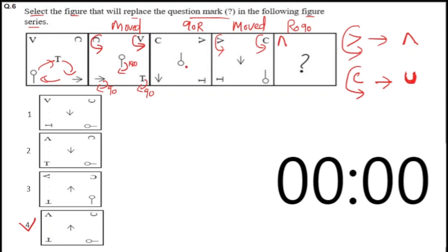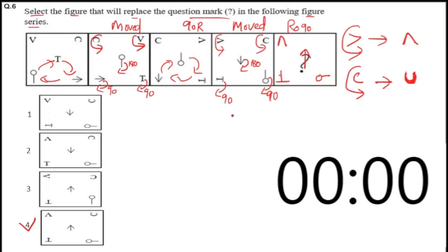Again, from the third to the fourth figure, they interchanged their position. Again, in the fourth to fifth figure, the arrow will rotate 180 degrees clockwise, this one will rotate 90 degrees clockwise, and T will rotate 90 degrees clockwise. That means the downward arrow rotated 180 degrees will point upward, this one 90 degrees rotated clockwise will be like this, and T rotated 90 degrees clockwise will be downward. So option 4 is your answer.